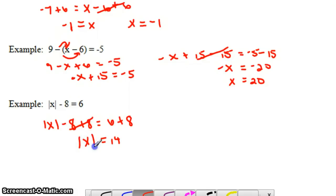We have the absolute value of x equals 14. There are two numbers that when you take the absolute value, you get 14. That's either positive 14, or our other possible answer is x equals negative 14.